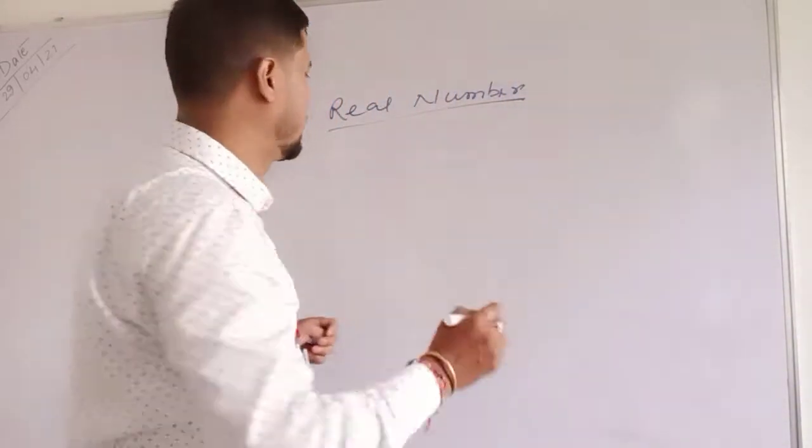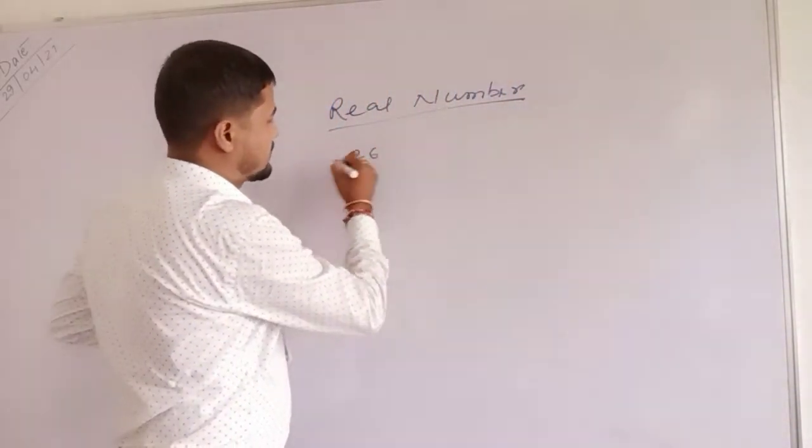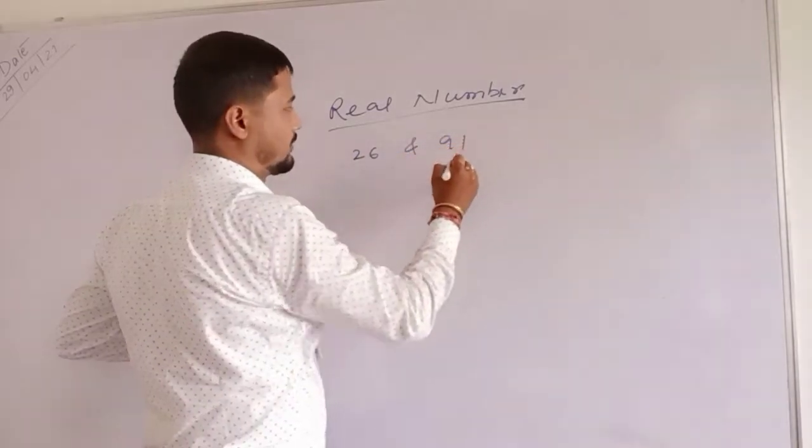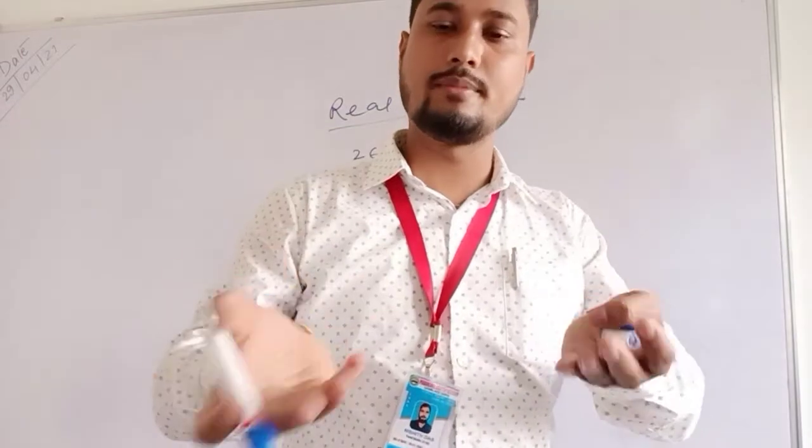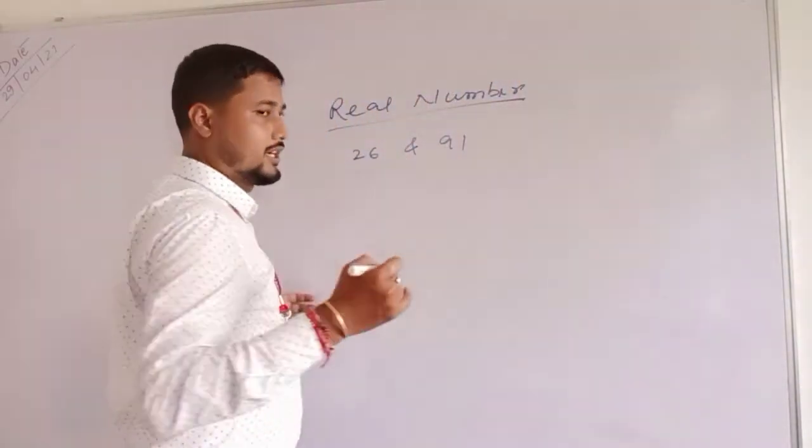Suppose 26 and 91. How to find LCM and HCF? Generally we are doing the traditional factorization method.